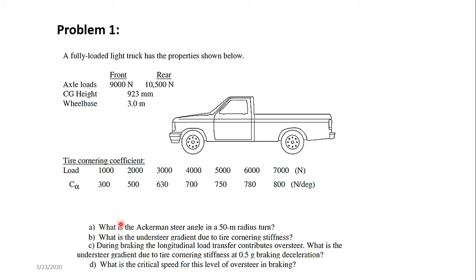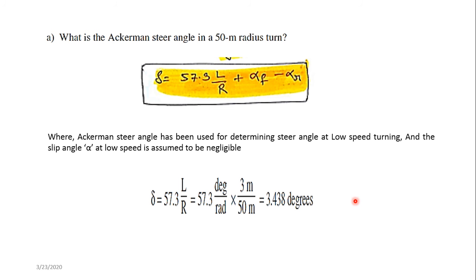The question asks four things: first, what is the Ackermann steering angle in a 50-meter radius turn; second, what is the understeer gradient due to tire cornering stiffness; third, during braking, the longitudinal load transfer contributes oversteer — what is the understeer gradient due to cornering stiffness at 0.5g braking acceleration; and fourth, what is the critical speed for this level of oversteering, calculated using the understeer gradient from part three.